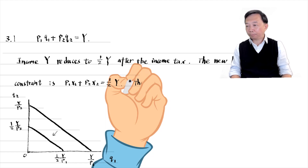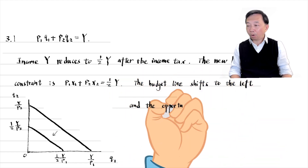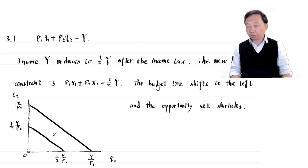Income Y reduces to half after the income tax. The new budget constraint is as follows. The budget line shifts to the left, or inward toward the origin, and the opportunity set shrinks from the big triangle to the small triangle. To find the intercept of the budget line on the Q1 axis, we set Q2 equal to 0. Similarly, we find the intercept on the Q2 axis by setting Q1 equal to 0. It is a parallel shift because the slopes of the budget lines are identical.